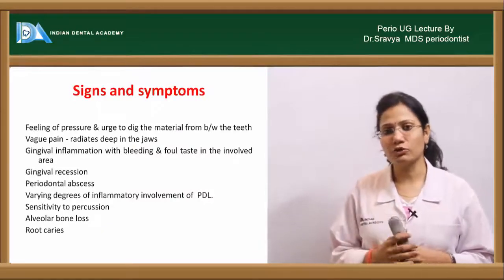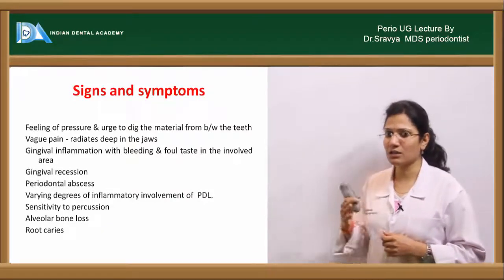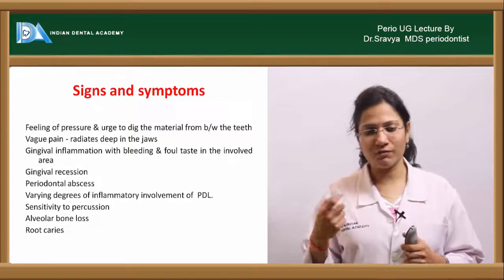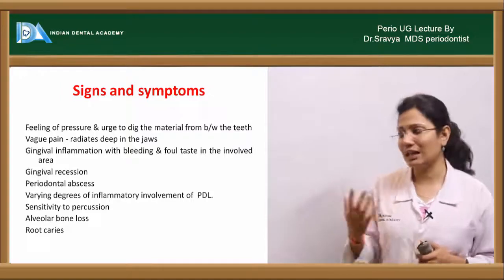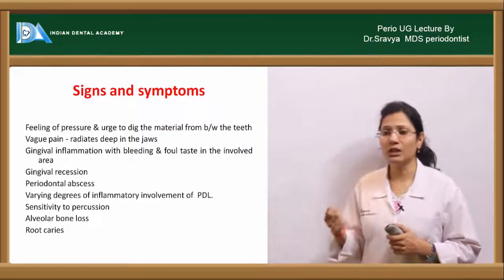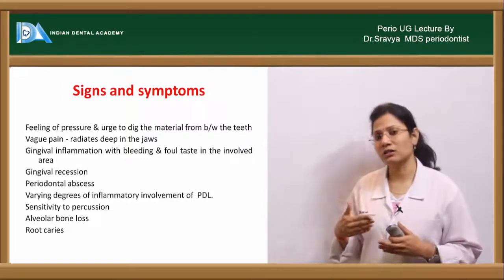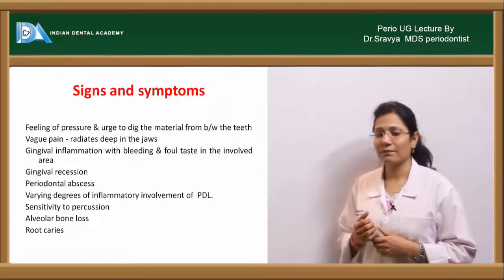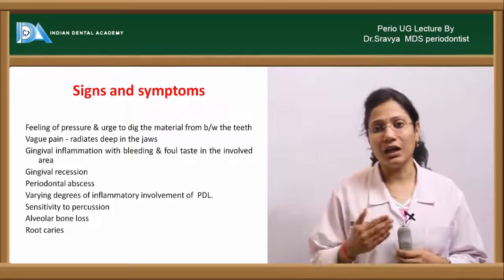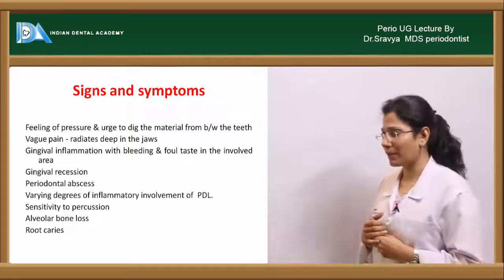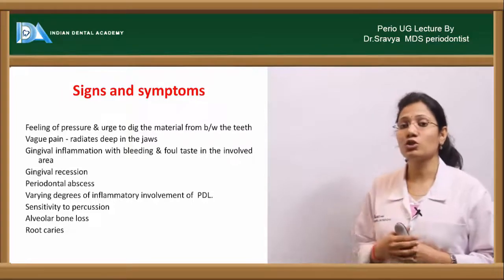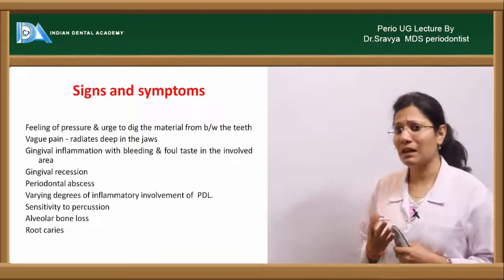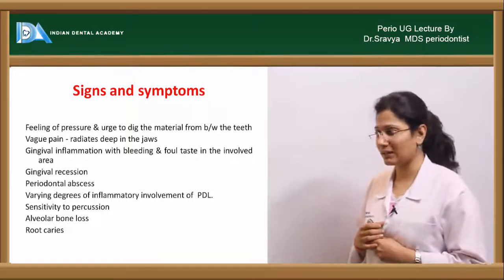What are the signs and symptoms of food impaction? The patient feels like using a toothpick and constantly digging the area to remove the lodged food, as it creates constant pressure in the interproximal areas. The patient may also complain of a vague, dull, gnawing type of pain deep in the jaws. It is associated with gingival inflammation, bleeding on probing, foul smell, and foul taste.